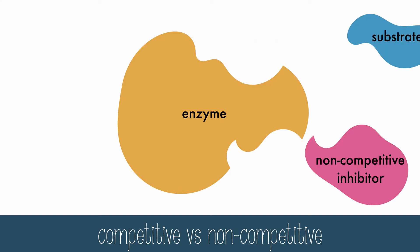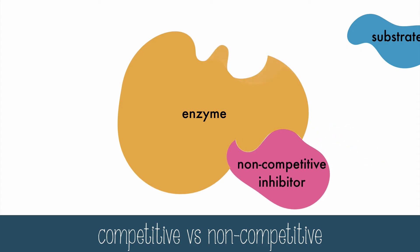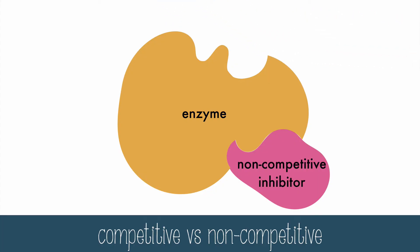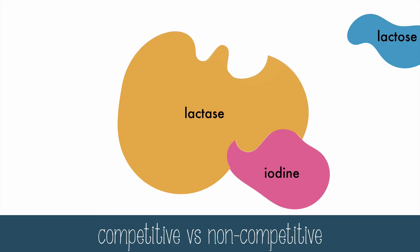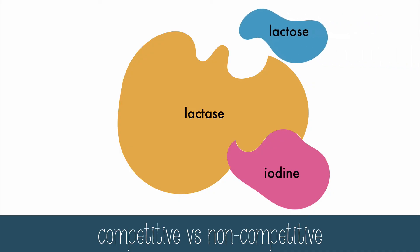A non-competitive inhibitor will bind with an allosteric site on the enzyme, which results in a change of shape of the enzyme. This shape change will prevent the substrate from being able to fit into the active site. A real example of a non-competitive inhibitor is iodine, which binds to an allosteric site on lactase, alters the shape of the enzyme, and prevents lactose from binding to the active site.